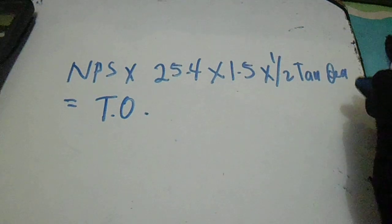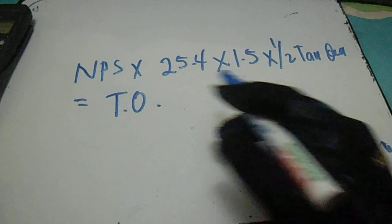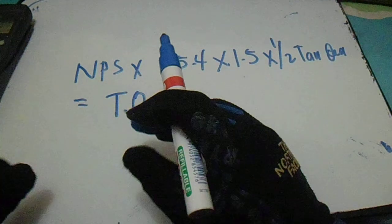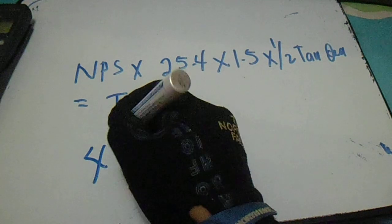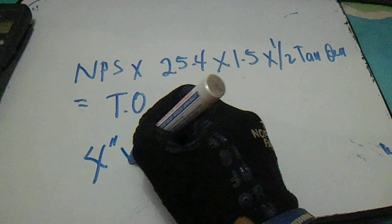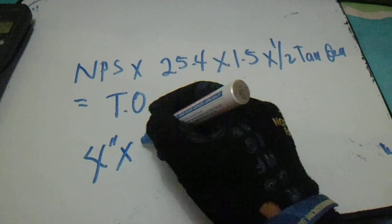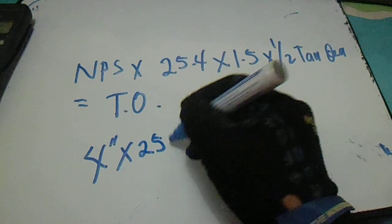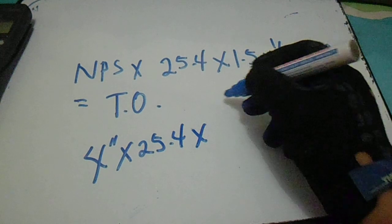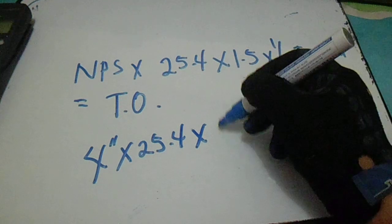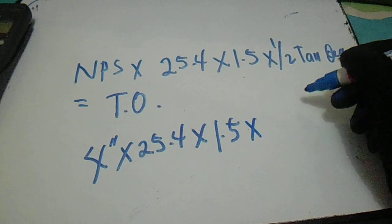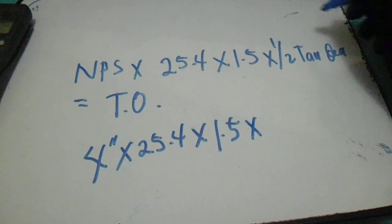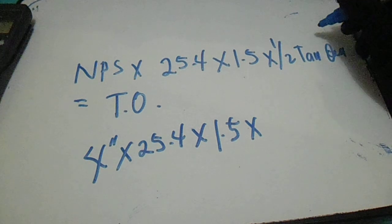Now for an example. NPS means nominal pipe size. Let's say we have a 4 inch pipe. We multiply it by 25.4, then by 1.5, and let's say our angle is 30 degrees.